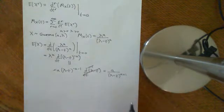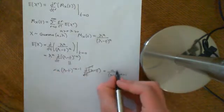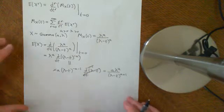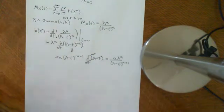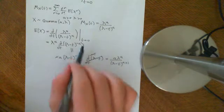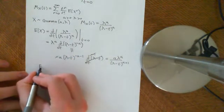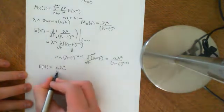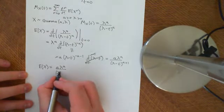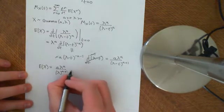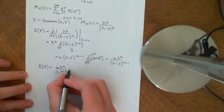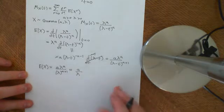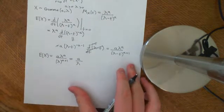And what we got rid of, of course, was λ to the power of a, so let's put that back and we get a times λ to the power of a over (λ minus t) to the power of a plus 1. Now what we need to do is evaluate that at t equal to 0. So the expected value of X is going to equal a λ to the power of a over λ to the power of a plus 1. That cancels with the λ to the power of a up here, so we get a over λ as the expected value of X.